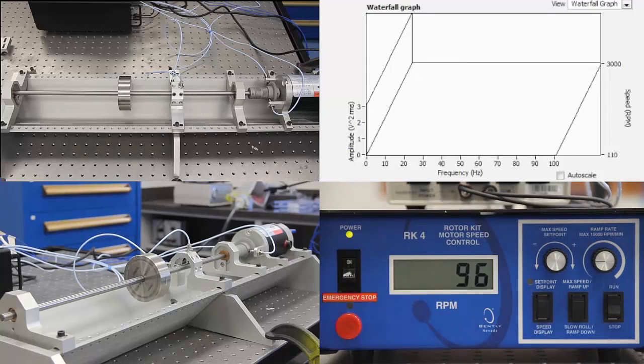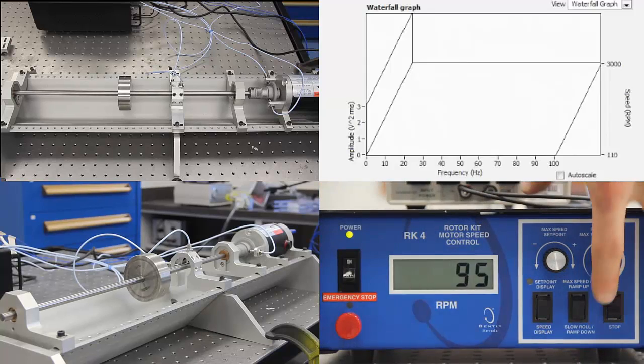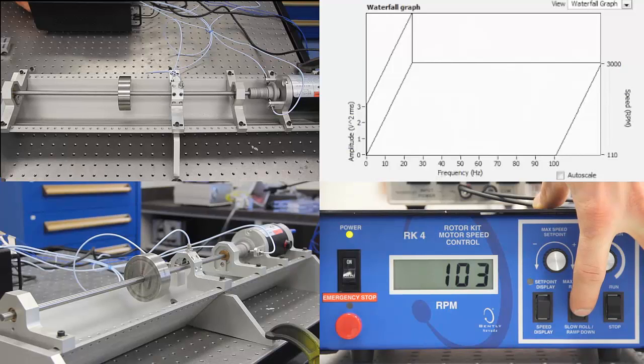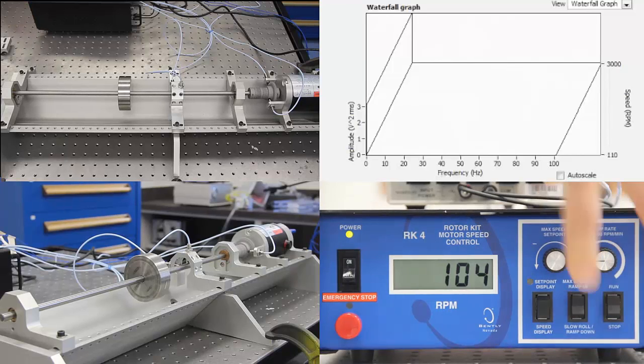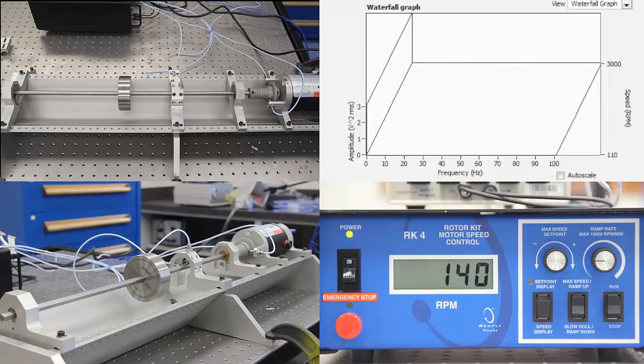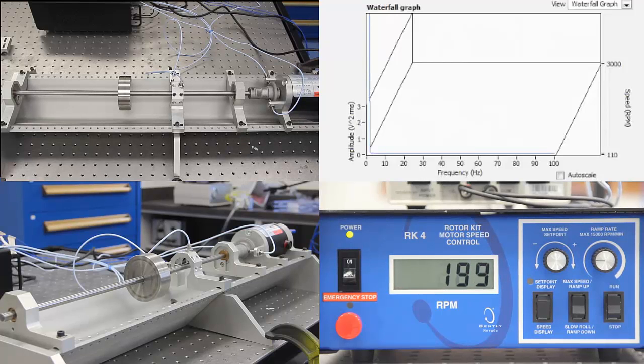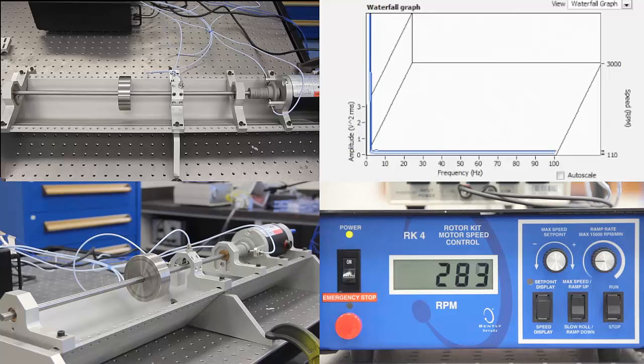The shaft disc system is supported by rigid bearings and is driven by the motor. The motor speed controller is shown at the bottom right corner. At the top right corner, the waterfall graph is shown, which is recording the amplitude of vibration for different speeds from the encoders.